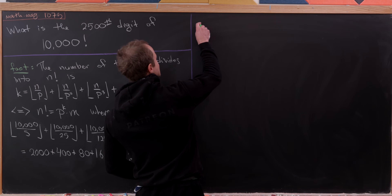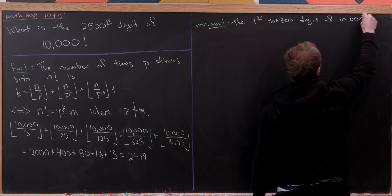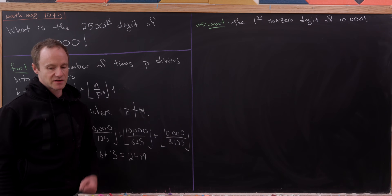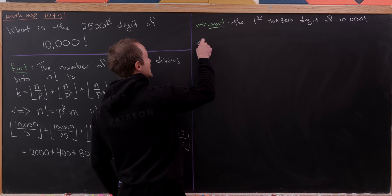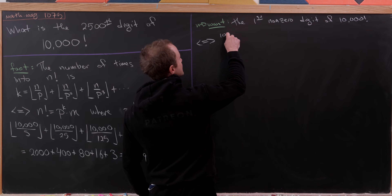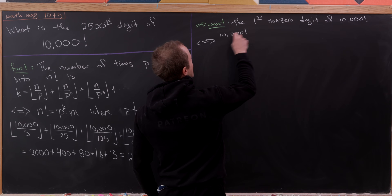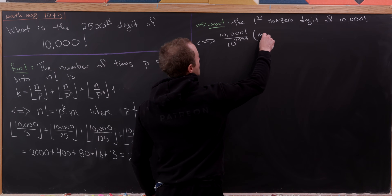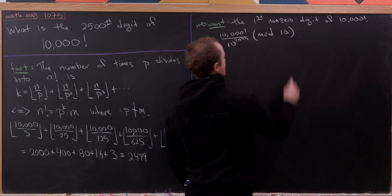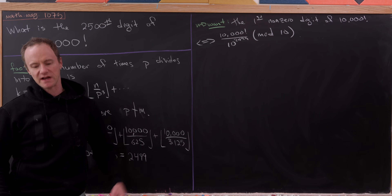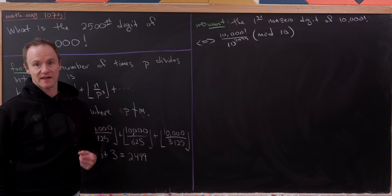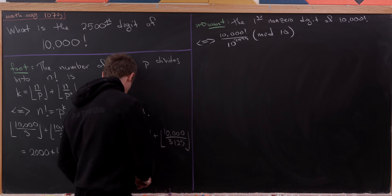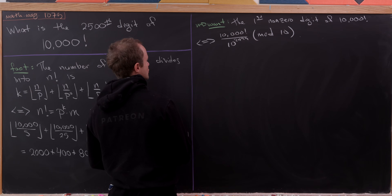That means we want the first non-zero digit of 10,000 factorial. In other words, we want to reduce 10,000 factorial over 10 to the 2,499 modulo 10 — we need to determine its residue modulo 10. To do this, I'm going to use a little notational tool.